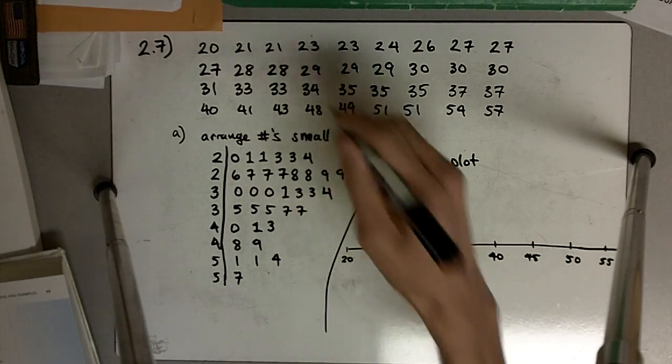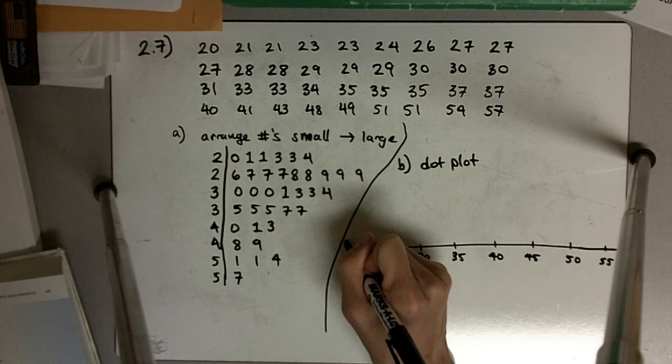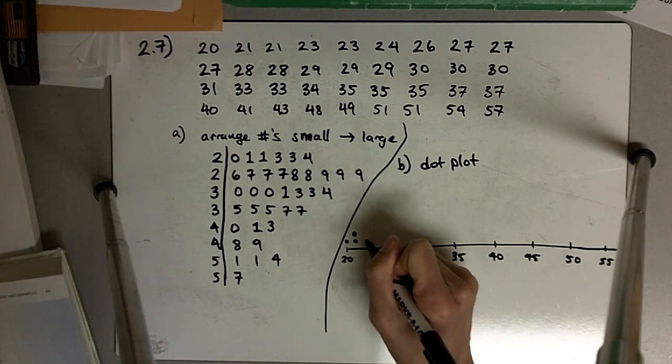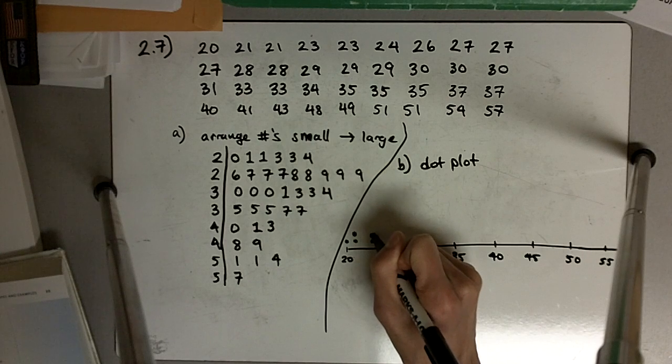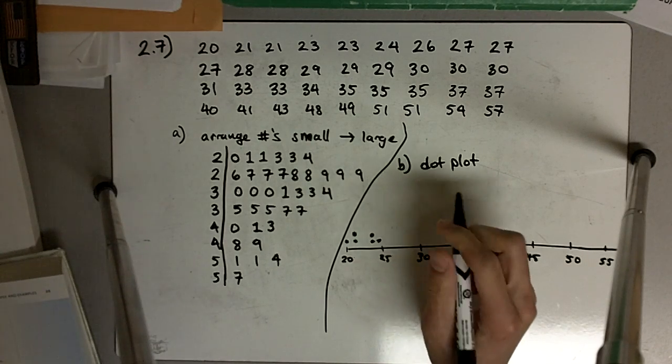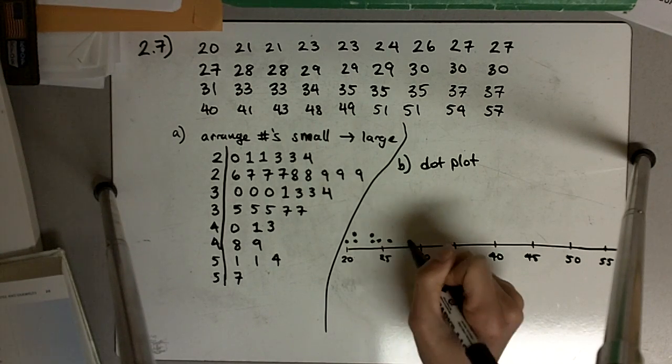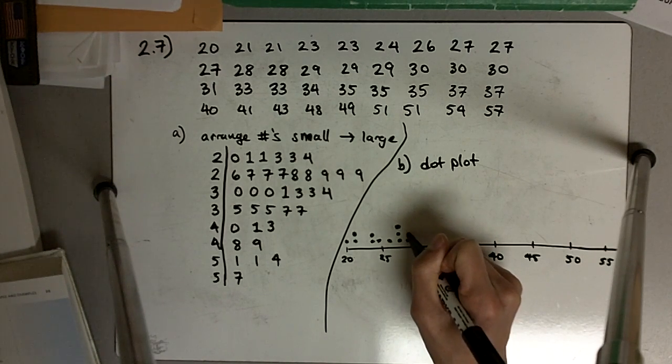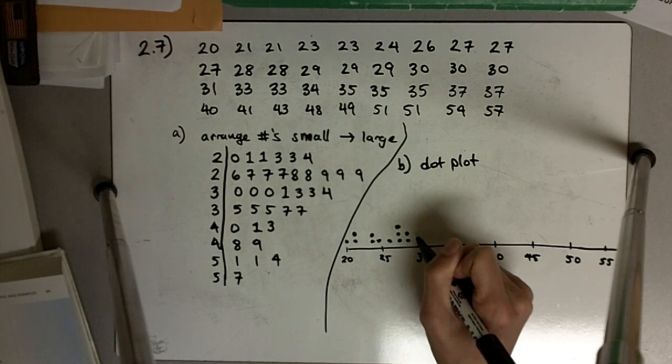But each point is going to get a dot here, so this will be 20, each one of the 21s, the 23s, 24, 26, 27s, 28s, 29s.